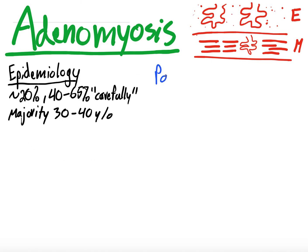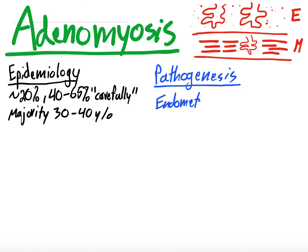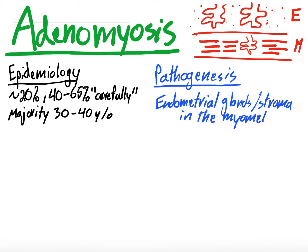Now, pathogenesis. The pathogenesis is endometrial glands — and some stroma as well — that end up within the myometrium. That's what I've tried to draw here. You have the endometrium and stroma, endometrial glands, and then this is the myometrium — which is supposed to be calm, smooth muscle — and there are these endometrial glands and stroma within it.